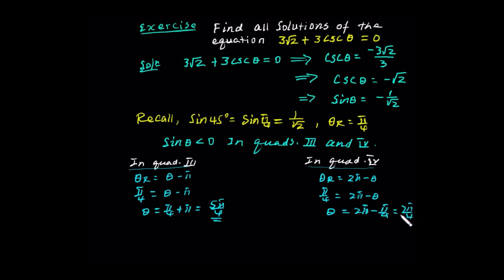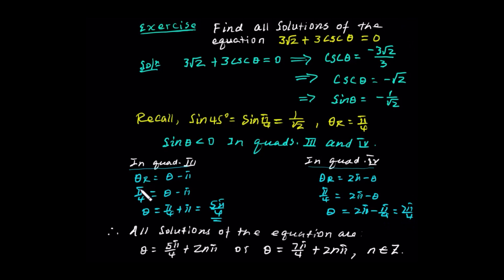In quadrant 4, theta r equals 2 pi minus theta. So theta equals 2 pi minus pi over 4, which equals 7 pi over 4. The co-terminal angles of 5 pi over 4 and co-terminal angles of 7 pi over 4 are all solutions of the equation 3 root 2 plus 3 csc theta equals 0. Therefore, all solutions are: theta equals 5 pi over 4 plus 2n pi, or theta equals 7 pi over 4 plus 2n pi, where n is an element of Z.